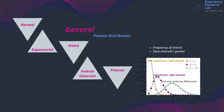Now let's focus on Poisson distribution. A Poisson distribution is a probability distribution showing how many times an event is likely to occur over a specified time interval or period.